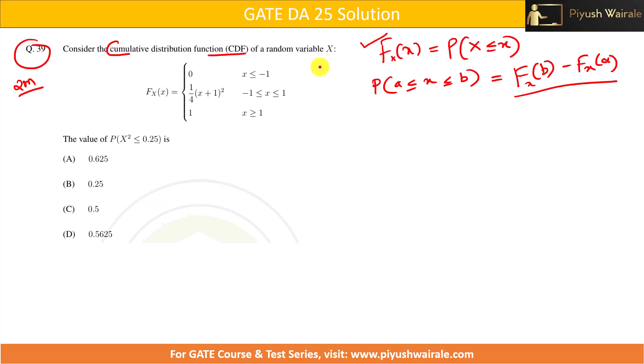Also for a continuous random variable, what we have discussed is that this is basically equal to integration of minus infinity to x, f(x) dx, where f(x) is basically a PDF, probability density function in the case of continuous random variable.